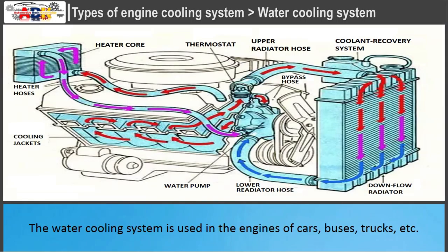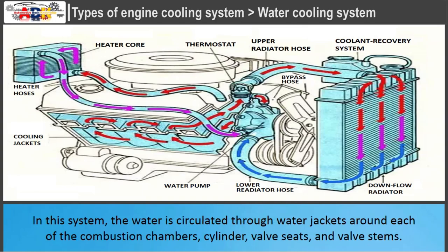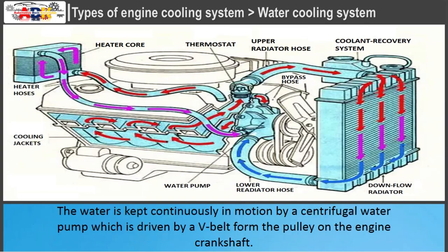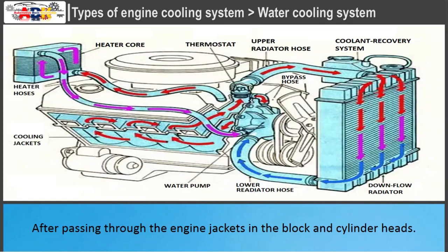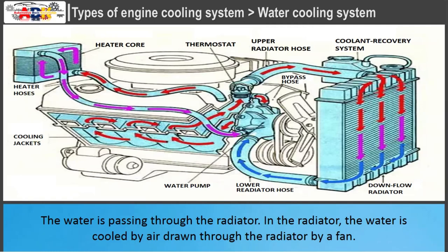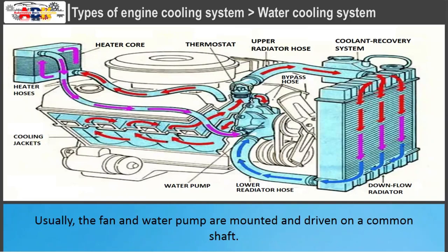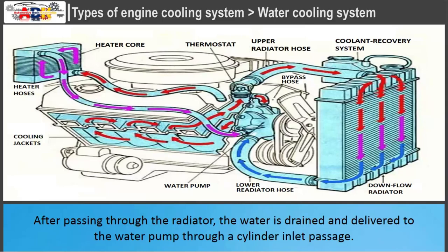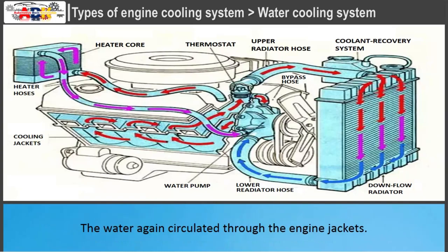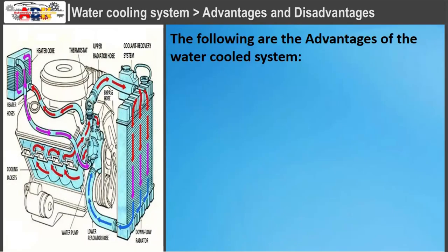Water cooling system: The water cooling system is used in engines of cars, buses, trucks, etc. In this system, water is circulated through water jackets around each of the combustion chambers, cylinders, valve seats, and valve stems. The water is kept continuously in motion by a centrifugal water pump driven by a V-belt from the pulley on the engine crankshaft. After passing through the engine jackets in the block and cylinder heads, the water passes through the radiator, where it is cooled by air drawn through the radiator by a fan. After passing through the radiator, the water is drained and delivered to the water pump through a cylinder inlet passage, and again circulated through the engine jackets.